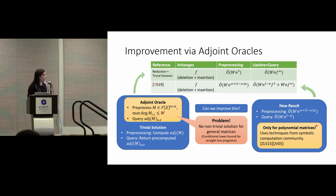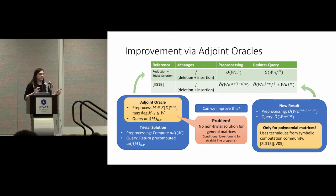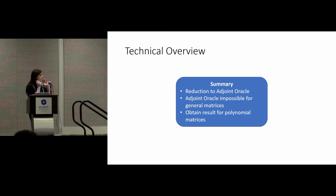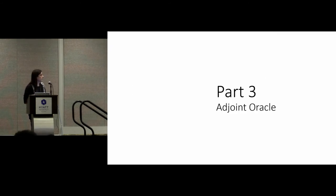This is our new result, and just by plugging this into the reduction, we get our failure-sensitive distance oracle. The nice thing is that all of this doesn't use any graph-theoretic results — it's just using techniques from the symbolic computation community. That's why I want to advertise this field here. The summary is: failure-sensitive distance oracles can be reduced to adjoint oracles; adjoint oracles are impossible if they must work for every field, but restricting to polynomial matrices gives us something useful.